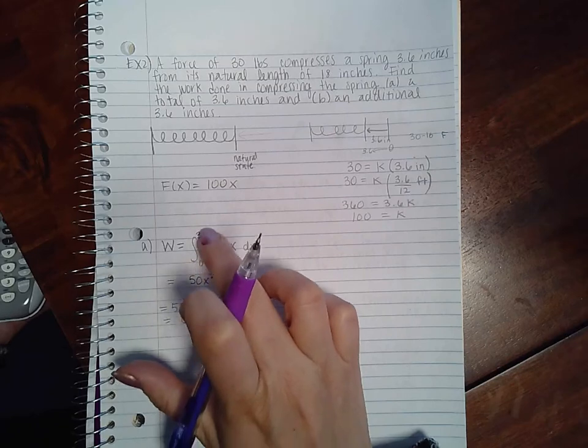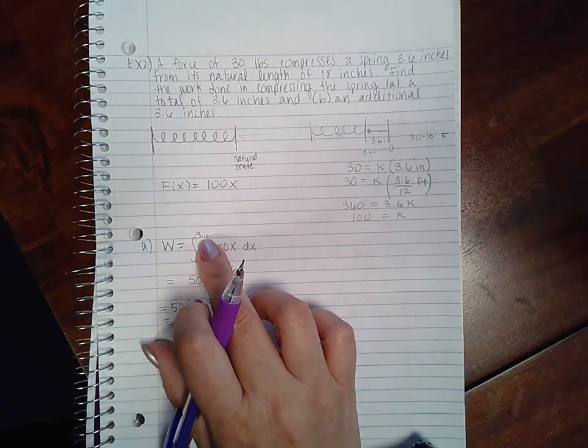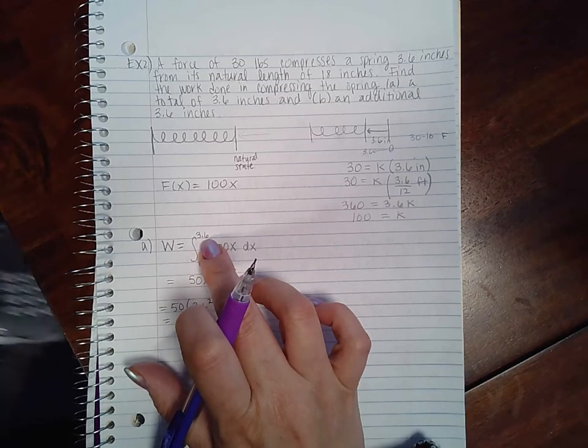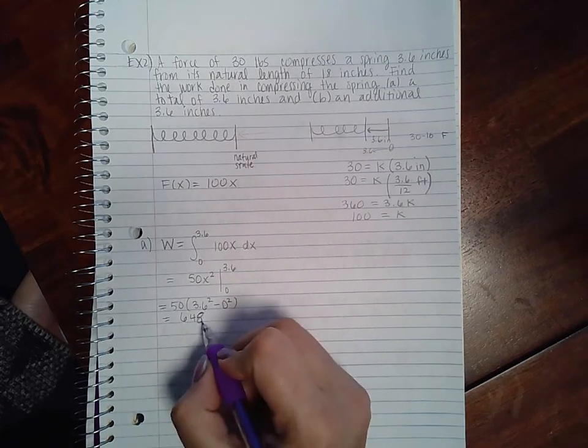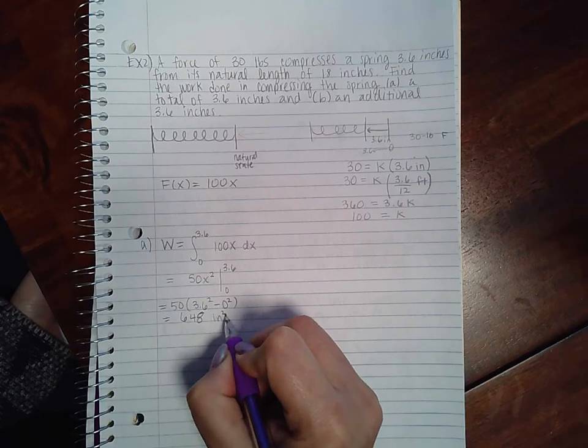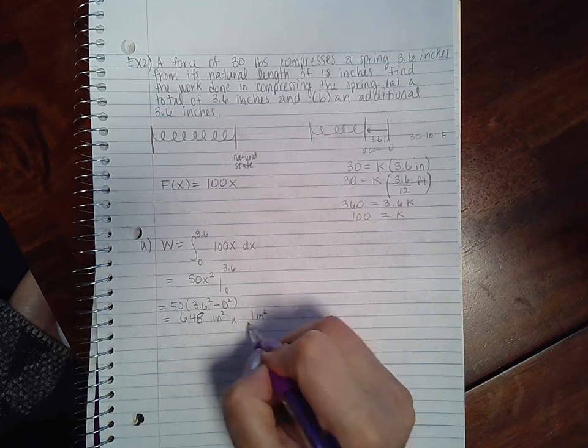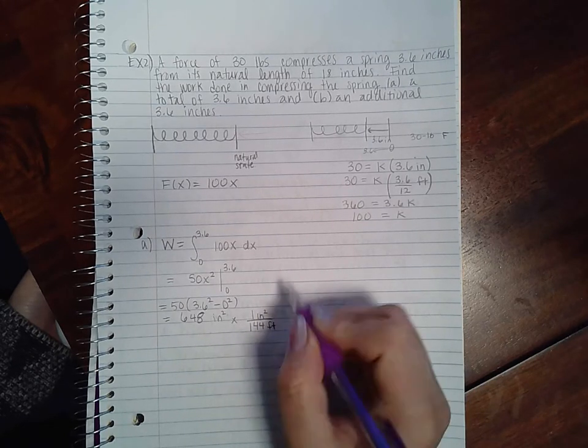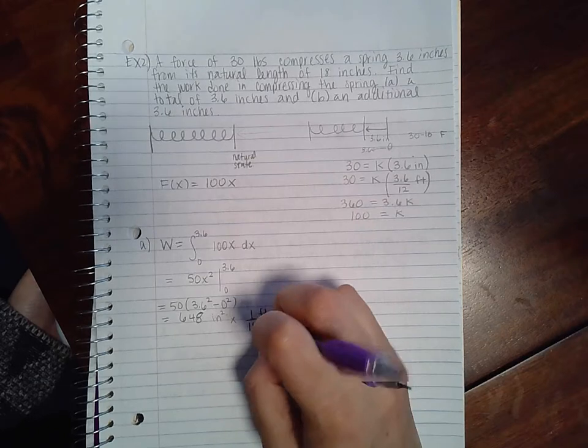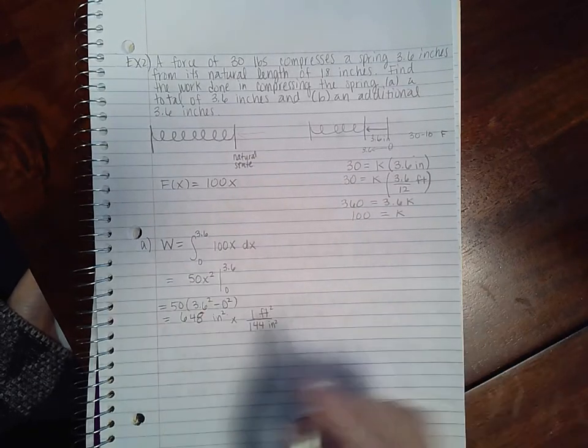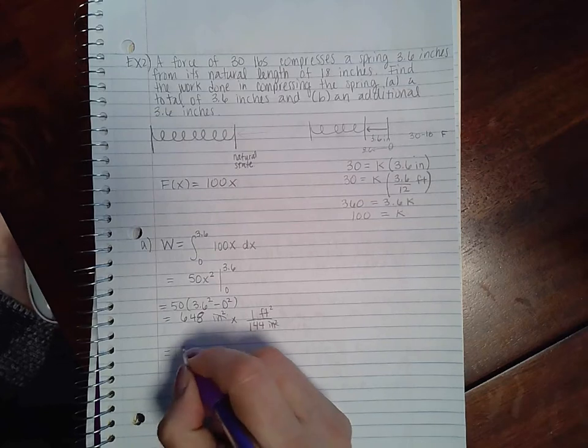I said these had to be in feet, right, so it could be in foot-pounds, and I kept it in inches. I prefer to put it here in inches, so this should have been 3.6 over 12, but I didn't. So when I end up with this measurement here, this measurement is going to be in inches squared. If I want to convert my inches squared into feet, it would have to be—one square foot is 144 square inches. So I end up with 648 divided by 144.